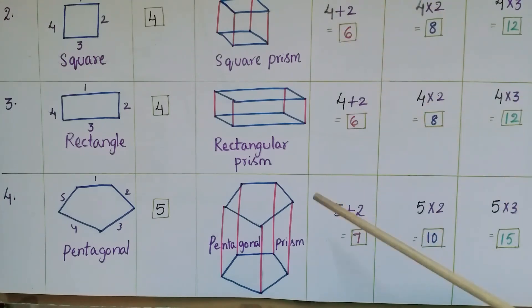Next one is pentagonal prism. We know that in pentagonal prism there are 2 congruent pentagonals. So pentagonal is having 5 sides, so number of faces for pentagonal prism are n plus 2 that is 5 plus 2 that is 7, so vertices are n into 2 that is 5 into 2 that is 10, and edges are n into 3, so 5 into 3, there are 15 edges in a pentagonal prism.